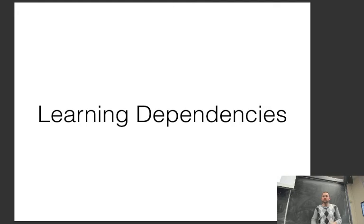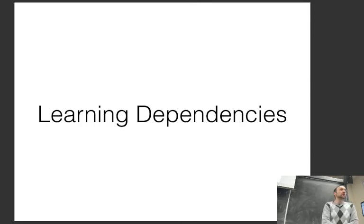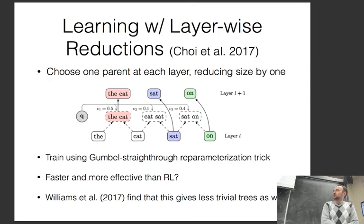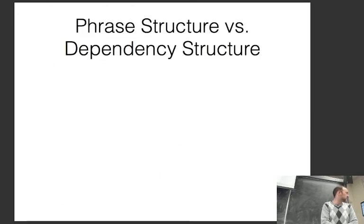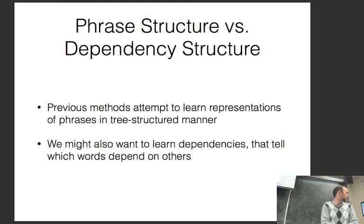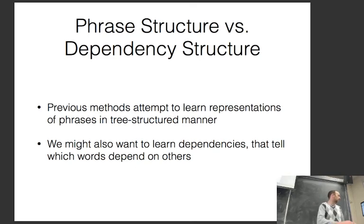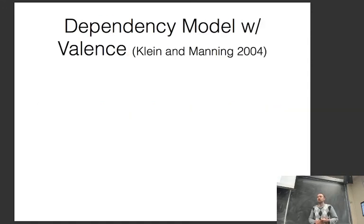All the methods so far are roughly phrase structure. There are also methods for dependency structure. The Dependency Model with Valence (DMV) by Dan Klein and Chris Manning is a generative model — a language model over dependencies — where you generate top-down, producing the root first and then its children on either side. For both left and right, the model decides whether to continue generating words and if so generates them.